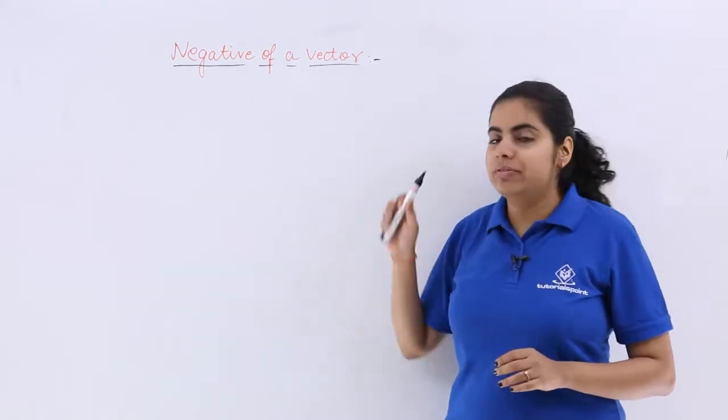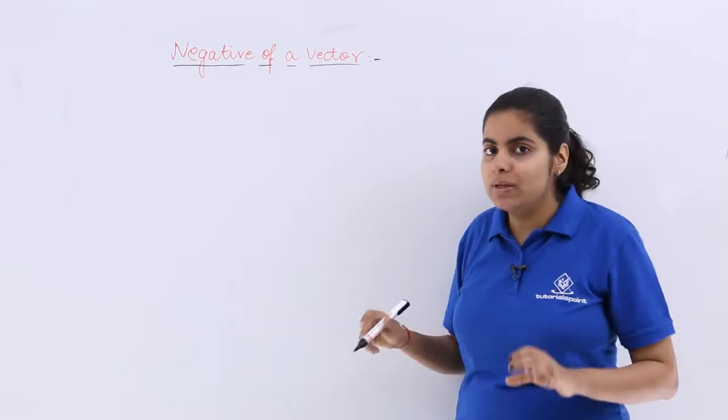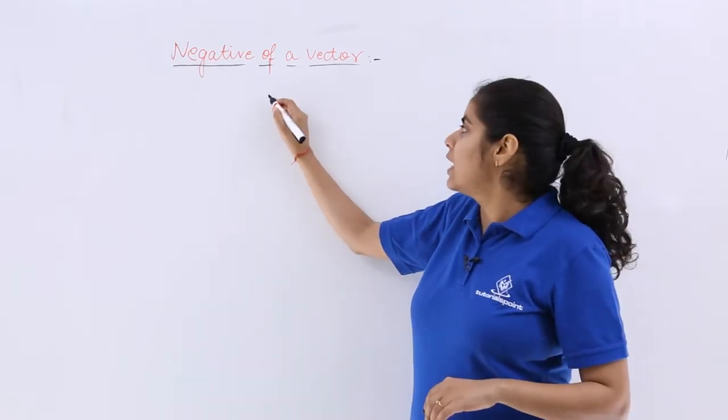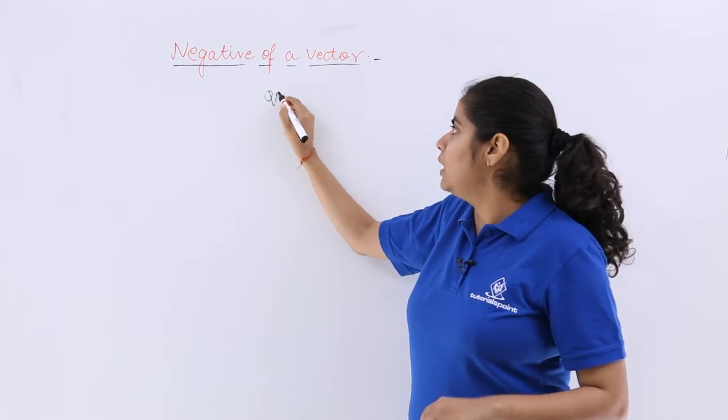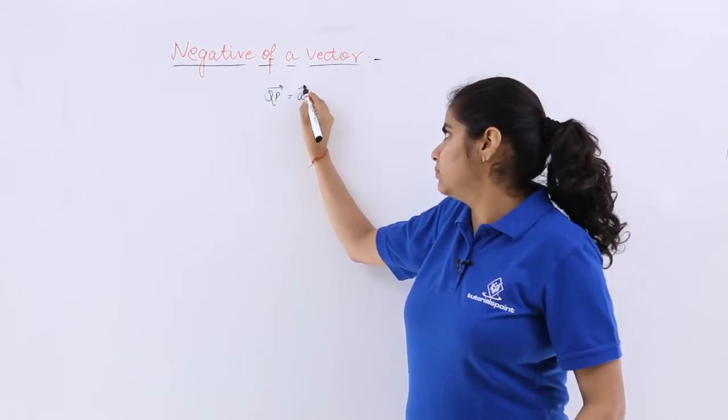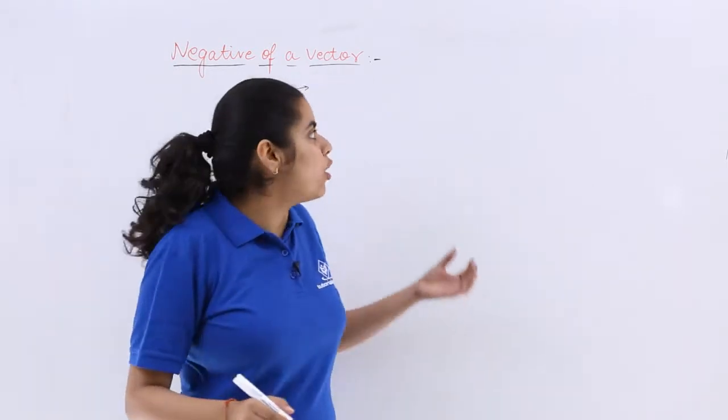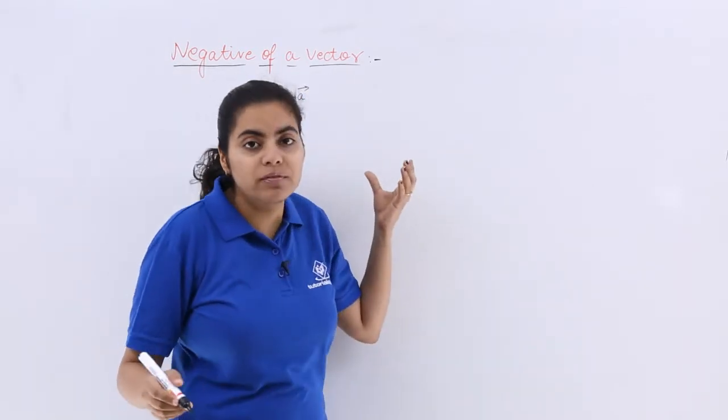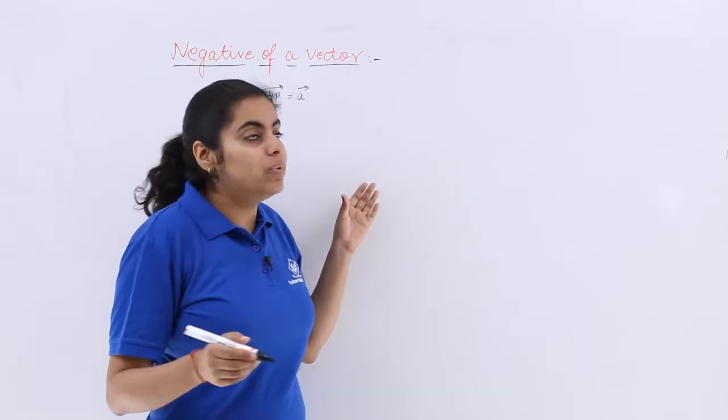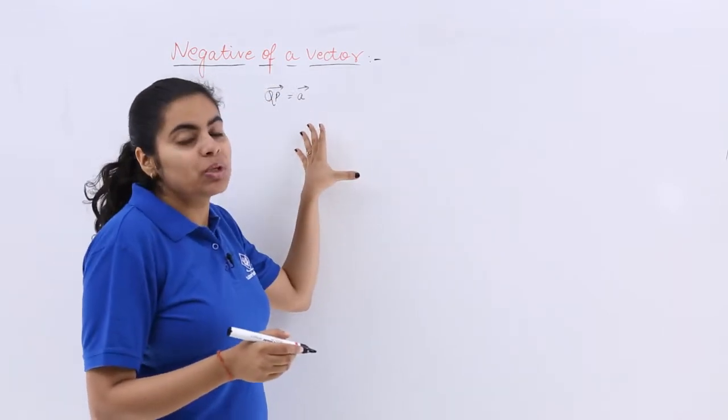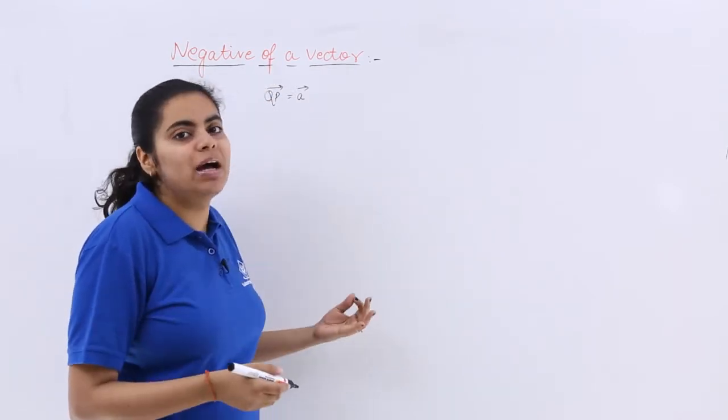So negative of a vector means what? If you have been given any vector, say QP is your vector A, then negative of QP or negative of this vector A will be any vector which will be having the same magnitude but the opposite direction.